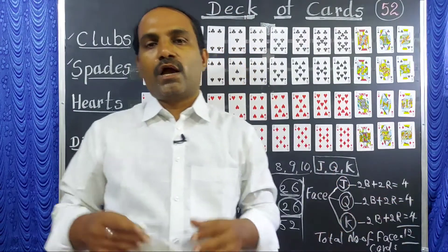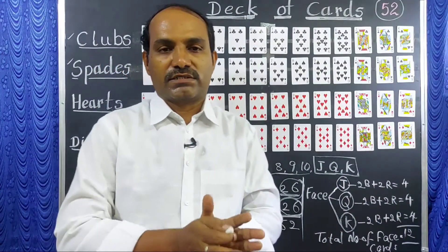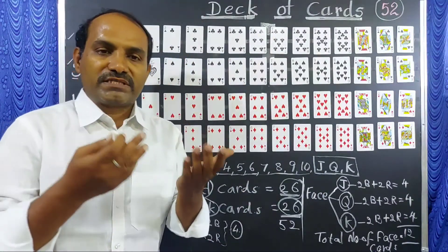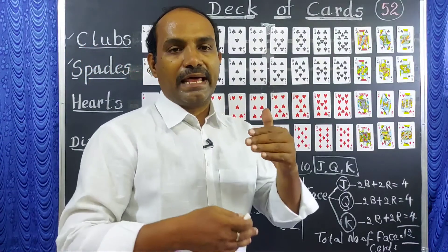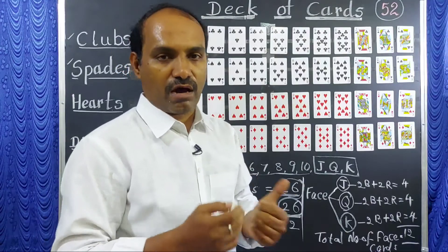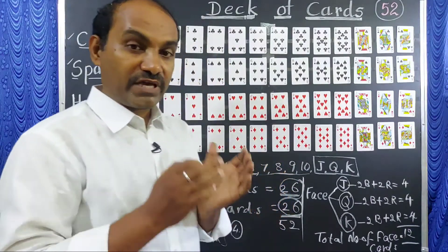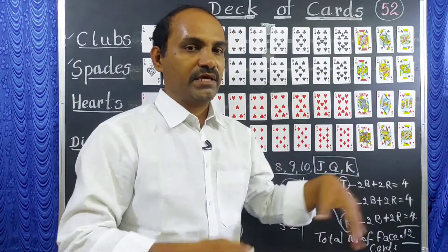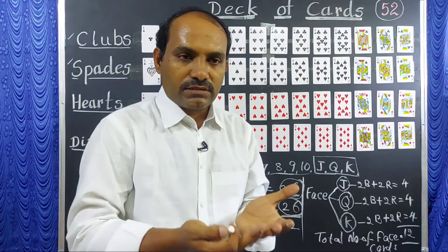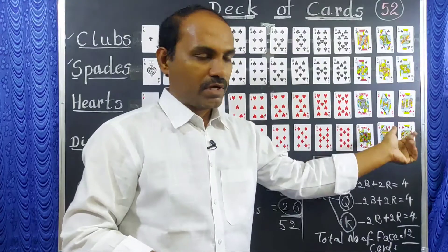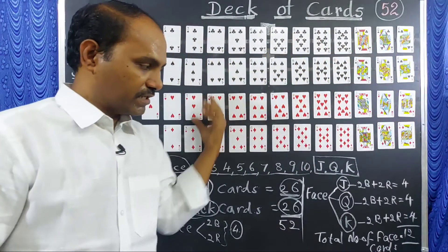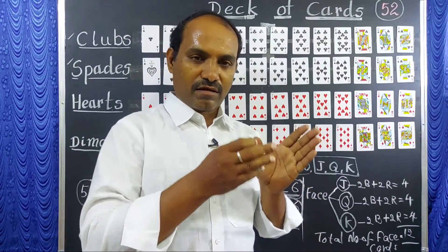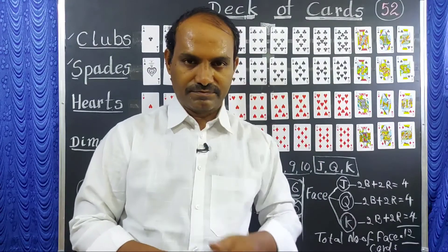Let us check: the total number of face cards is 12. How many face cards are red? In hearts there are 3 face cards, and in diamonds there are 3, so 6 red face cards. By using this complete information, we are going to find the probability of getting a card from a deck of cards. Thank you very much.